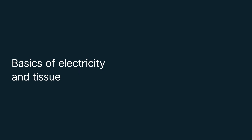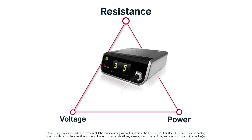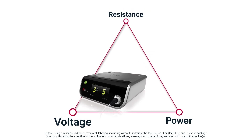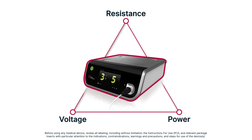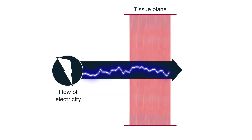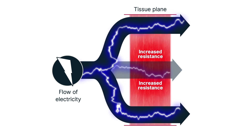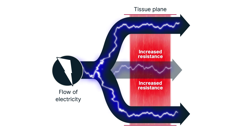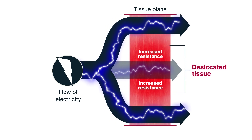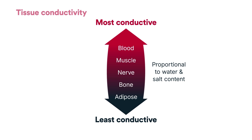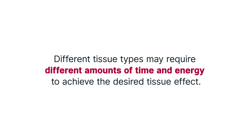Basics of Electricity and Tissue. Modern electrosurgery generators use the principles of electricity and balance voltage, power, and the resistance encountered from tissue impedance to deliver the desired tissue effect. If electrical current is impeded, it will find an alternate, less resistant path to complete the circuit. In electrosurgery, the most common source of tissue resistance is desiccation, or the loss of moisture when heat is applied. Tissue conductivity is proportional to its water and salt content. Blood is the most conductive, and adipose tissue is the least conductive. This explains why different tissue types may require different amounts of time and energy to achieve the desired tissue effect.